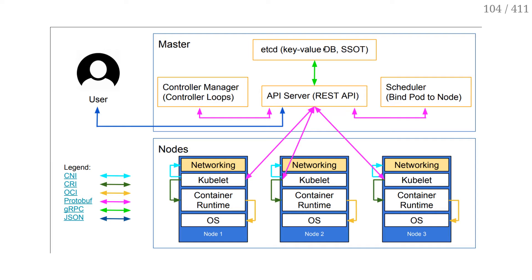I can't start a new container, the auto-scaling stops working, the failover stops working. It's a little bit as if I had lost SSH access to my machine, to simplify a little bit. So if my control plane goes down, it's not critical as long as it's just for a few minutes, but if it lasts longer, then eventually I'm going to have big problems.